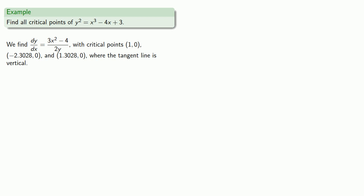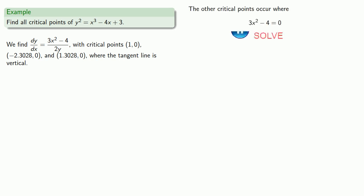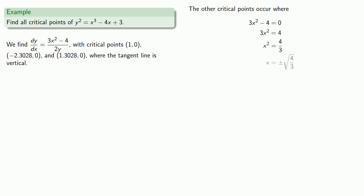Where else do we get critical points? We get additional critical points where the derivative is 0. Because this is a quotient, the only way a quotient can be 0 is if the numerator is 0. So we set the numerator equal to 0 and solve, which gives us x equals plus or minus the square root of 4 over 3.